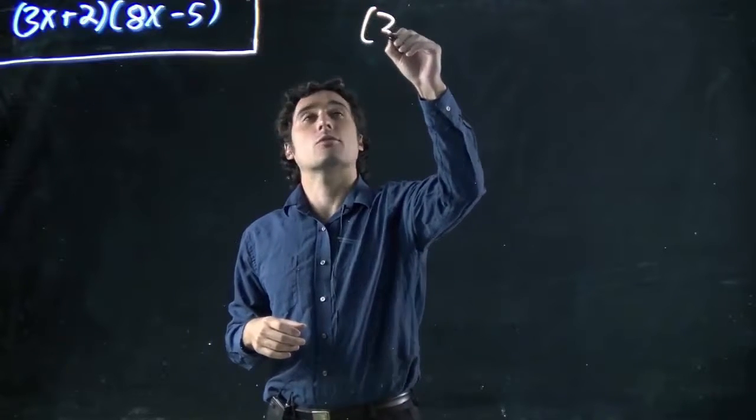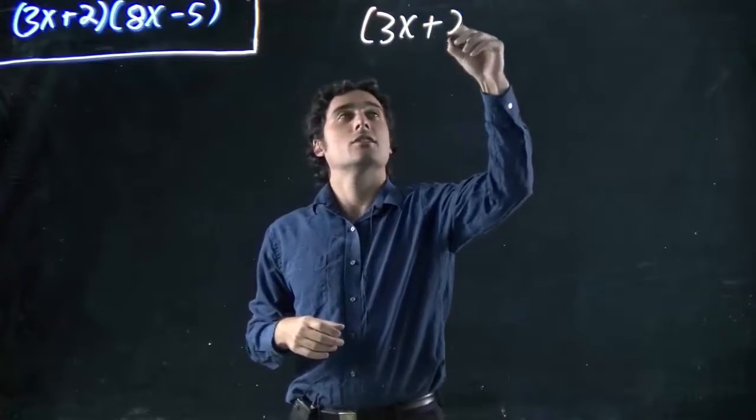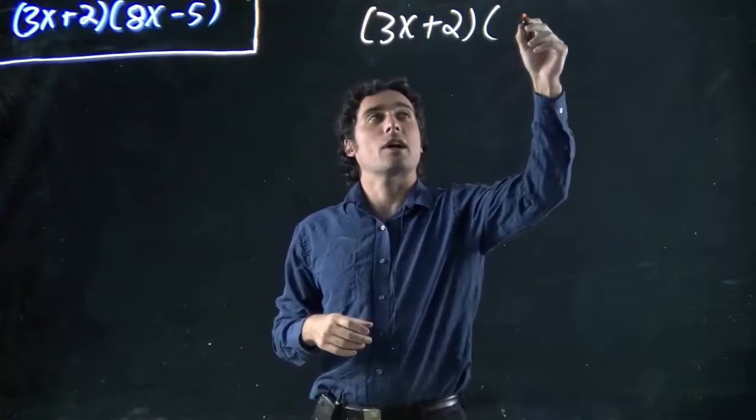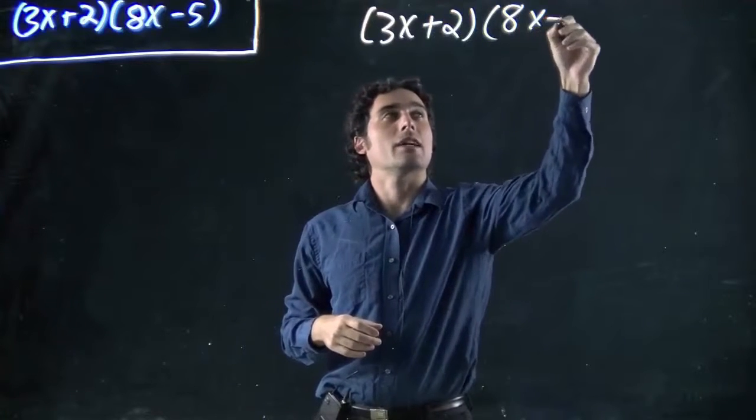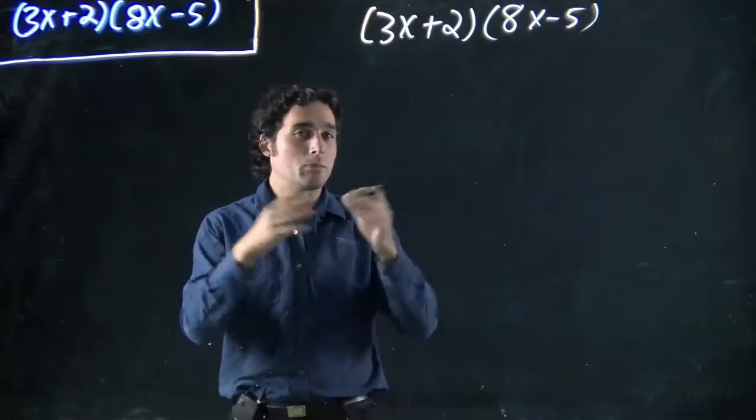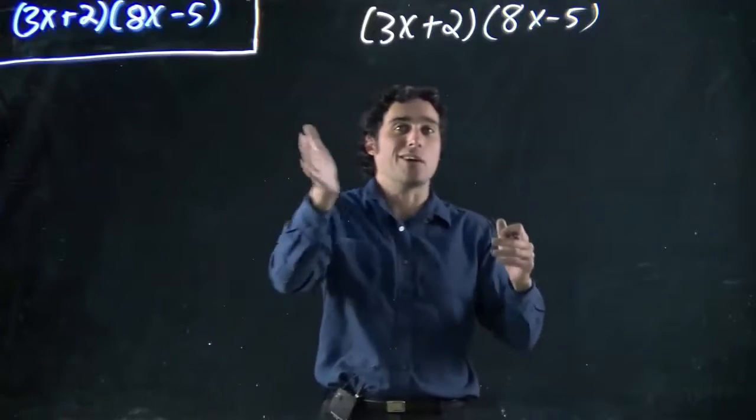So what do we got? We got one bracket with 3x plus 2, and in the next bracket, 8x minus 5. And we're multiplying these together. We're expanding this out, which really means multiplying them together.